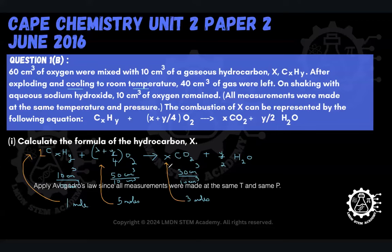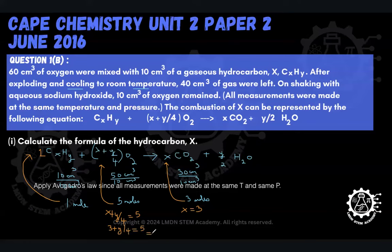Looking at the CO₂ coefficient, we get that X is equal to 3. Now looking at the oxygen coefficient, X + Y/4 = 5. We already know X is 3, so plugging in: 3 + Y/4 = 5. Bringing the 3 over gives 2 on the right-hand side, and cross-multiplying by 4 gives us Y = 8.